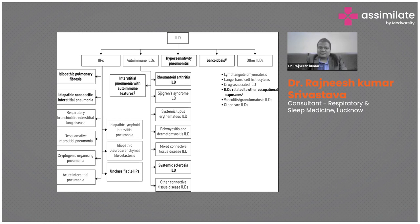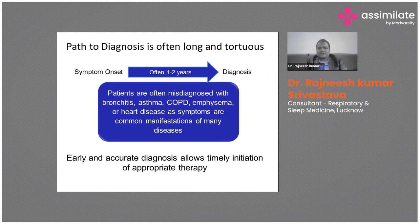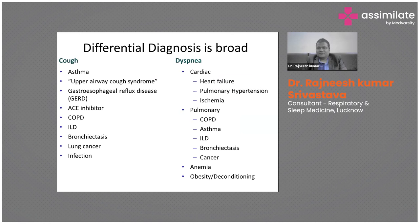The path to diagnosis is long and tortuous — symptom onset to diagnosis often takes one to two years, and patients may be misdiagnosed with bronchitis, asthma, COPD, emphysema, or heart disease. Early and accurate diagnosis allows timely initiation of appropriate therapy. However, diagnosing ILD is difficult because cough and breathlessness can be due to multiple causes: asthma, GERD, COPD, ILD, bronchitis, lung cancer, or cardiac causes like heart failure.